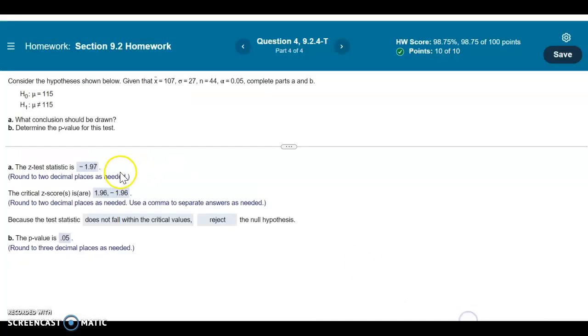So when you're checking this, it does not fall within the critical values. You have to reject.